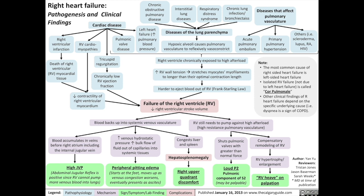Lung parenchymal diseases include chronic obstructive pulmonary disease, interstitial lung diseases, respiratory distress syndrome, and chronic lung infection and bronchiectasis. These lung parenchymal disorders result in hypoxic alveoli, which causes the pulmonary vasculature to reflexively vasoconstrict. Since the right ventricle is responsible for pumping blood into the lungs, vasoconstriction of the lung blood vessels results in exposing the right ventricle to a chronically high afterload or high resistance, increasing right ventricular wall tension and stretching myocyte muscle fibers past their optimal contraction length, making it harder for the right ventricle to eject blood.